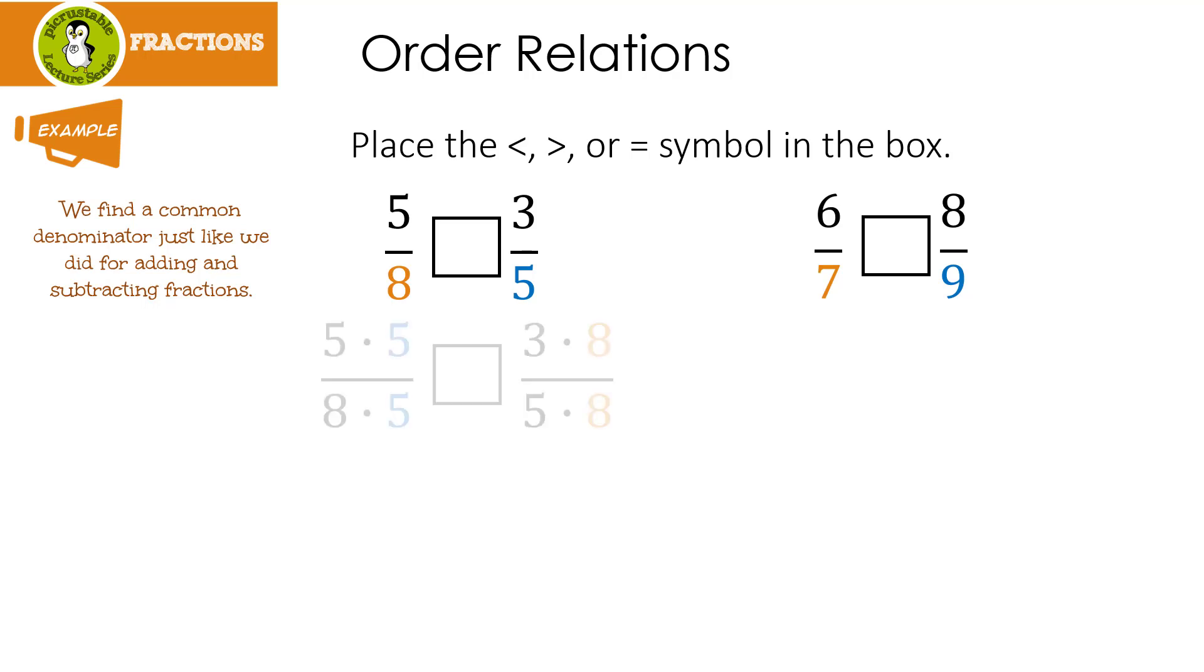So let's look at the first one. What I did is I took 5 eighths and I multiplied by the other denominator, 5. That's why I have 5 times 5 over 8 times 5. When I look at 3 fifths, you're going to notice that I multiplied the top and the bottom by 8, the other denominator.